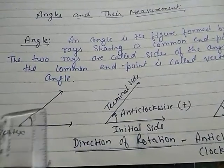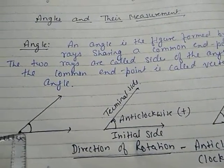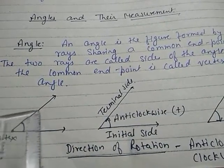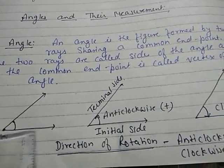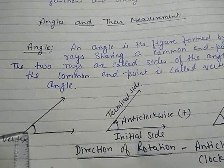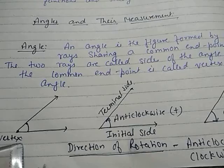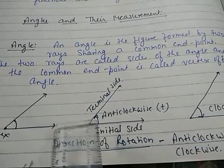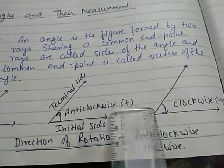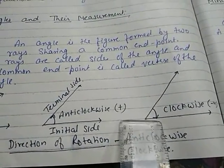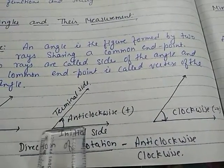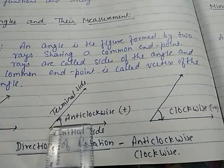This is your first ray and this is your second ray. The first ray, and then after rotation it converts into this ray. So this is your initial side and this is your terminal side. The common endpoint is called the vertex.